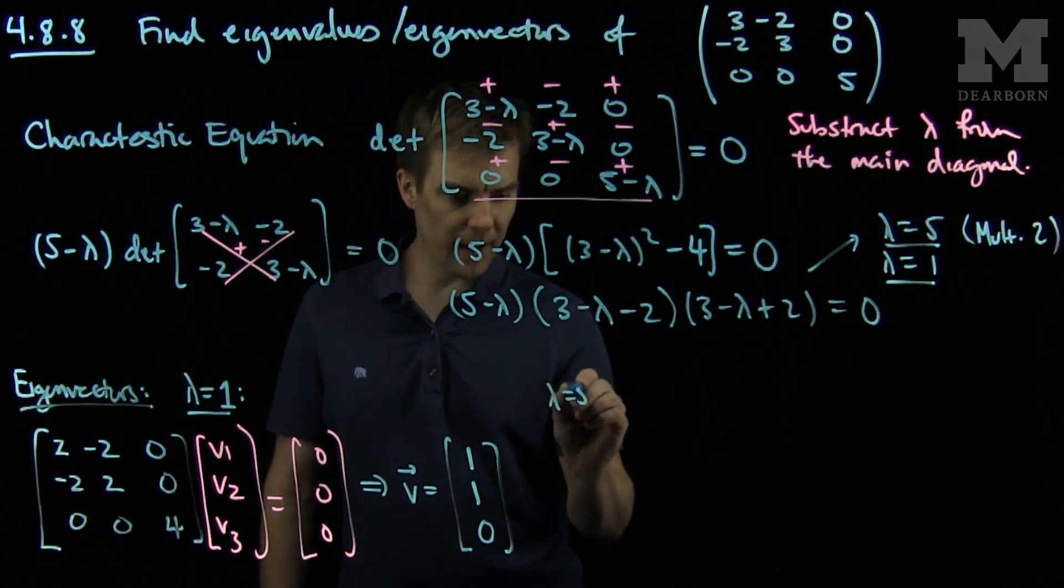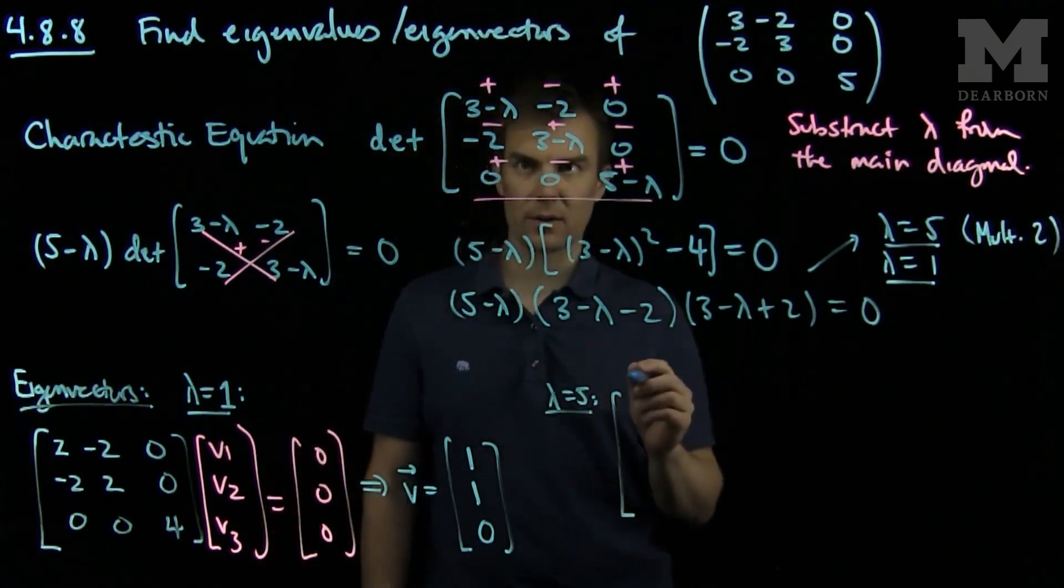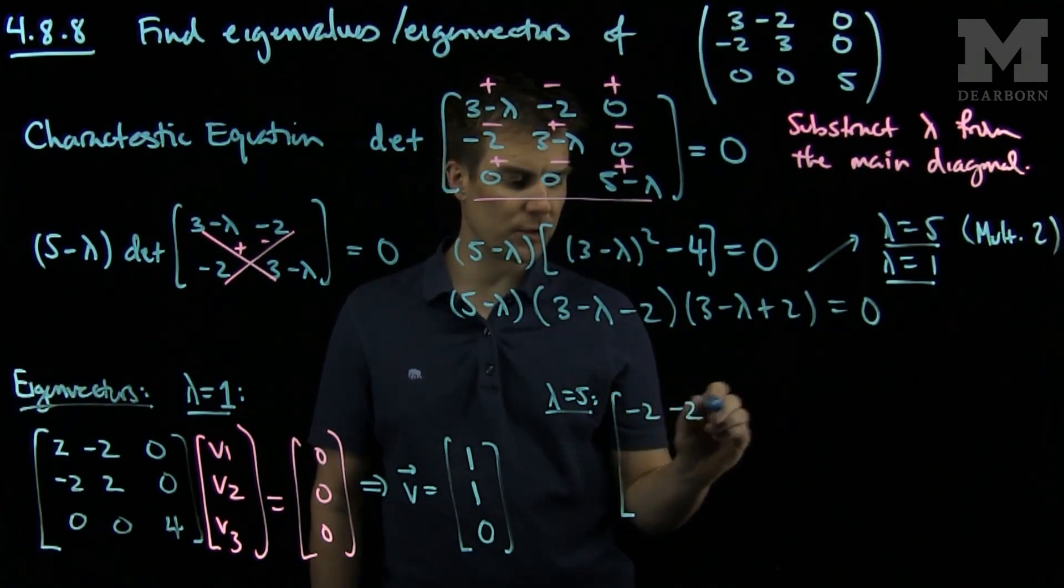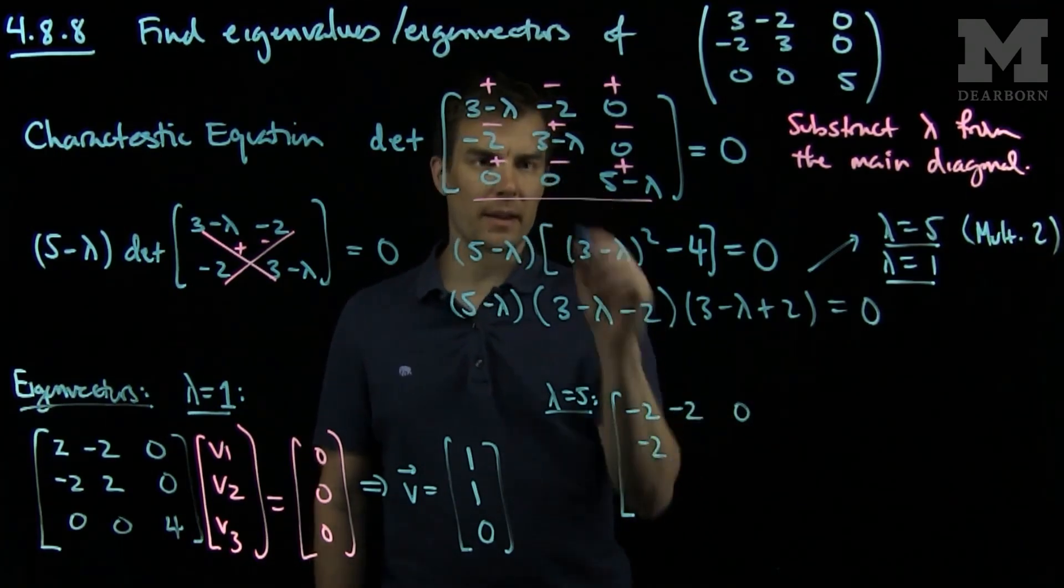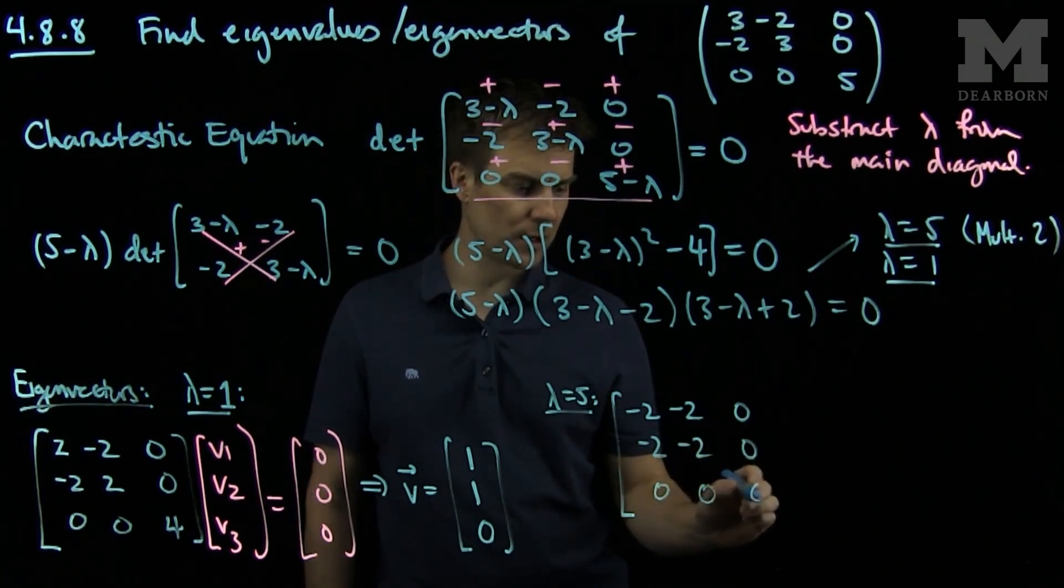When lambda equals 5, we'll subtract off 5 from the main diagonal. If I do so, I will have 3 minus 5, which is negative 2, negative 2, 0, and then negative 2, negative 2, 0, and finally 0, 0, 0.